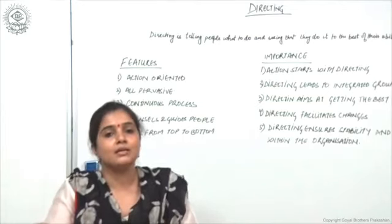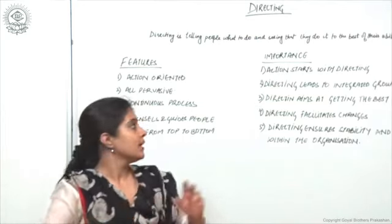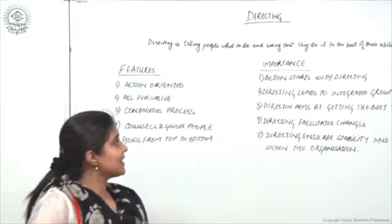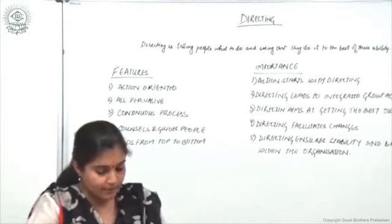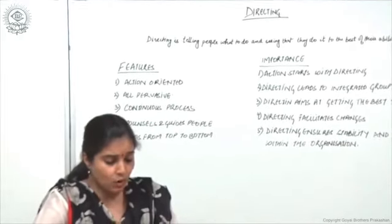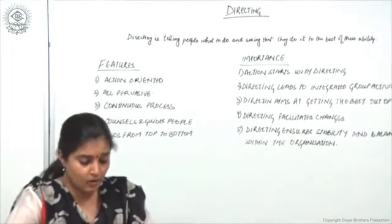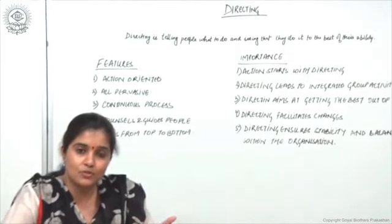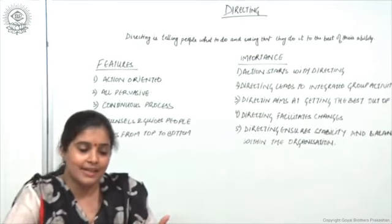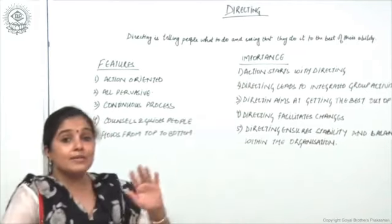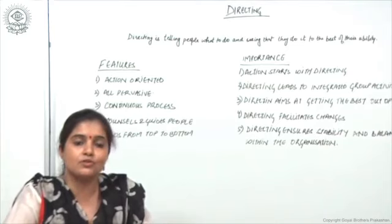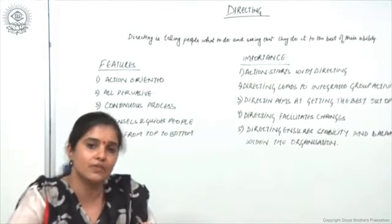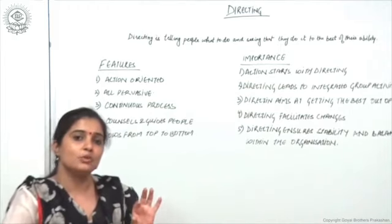What exactly is the meaning of the word directing? As the definition says, directing is telling people what to do and seeing that they do it to the best of their ability. Precisely, we can say directing puts life into all three functions of management — planning, organizing, and staffing. Directing is basically giving instructions to people as to how the job is to be done. Elements of directing include motivation — you motivate employees to perform to the best of their abilities so organizational goals are achieved effectively and efficiently. So directing basically means to give direction.